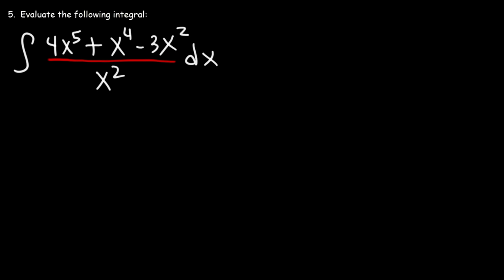Number five: evaluate the following integral. Check the description for links to additional videos on limits, derivatives, and integration. To evaluate this integral of 4x to the fifth plus x to the fourth minus 3x squared, all divided by x squared, we first simplify by dividing each term in the numerator by x squared.